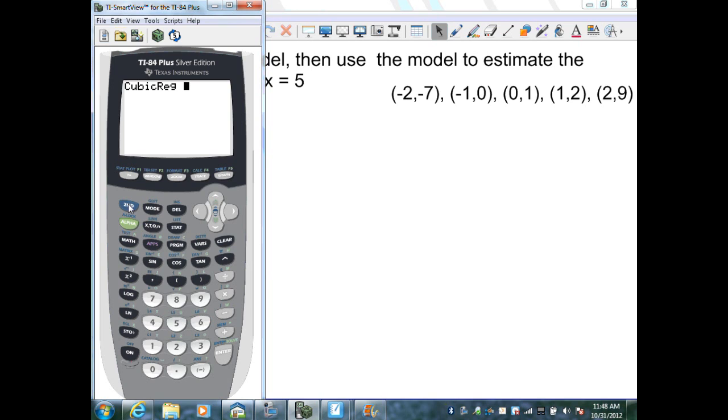Again, we want to name the list. So, second stat and x values from list one, comma, second stat, y values from list two, comma. And we want to plot that model by going to vars, y vars. And we already deleted that from number one. So, we can put that back in number one. And when we do, that gives me my cubic model when I hit enter again.